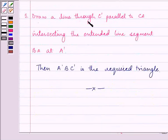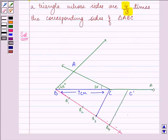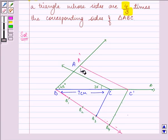Then we need to draw a line through C dash parallel to CA, intersecting the extended line segment BA at A dash. So we already have an extension of AB. Now through C dash, we will be drawing a line which is parallel to AC, intersecting the extended AB at A dash. And A dash B C dash is our required triangle.